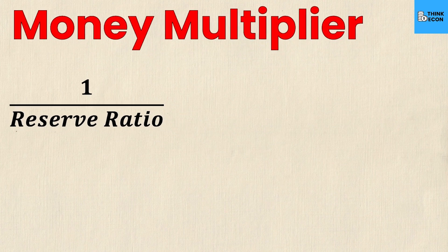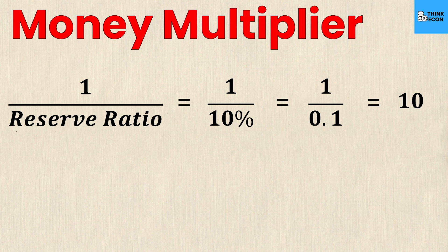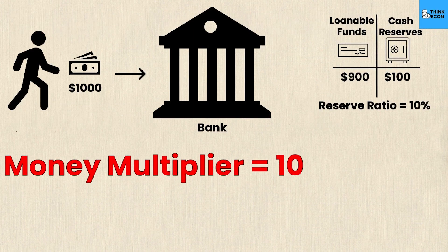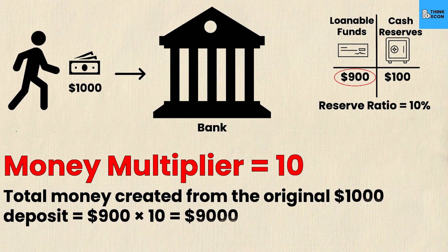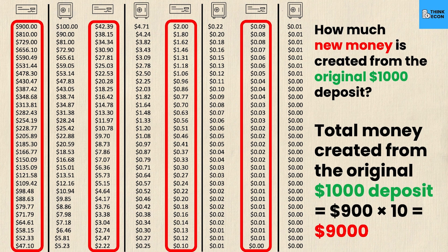The money multiplier is 1 over the reserve ratio. With a reserve ratio of 10%, that's 1 over 0.1, which equals 10. Now applying this to our example: we started with $1,000 and had loanable funds of $900 — the 90% that didn't need to go into the vault. Multiplying that first loanable funds figure of $900 by the money multiplier of 10 gives us $9,000. If you summed up all the iterations from the list on screen, that total would be exactly $9,000.